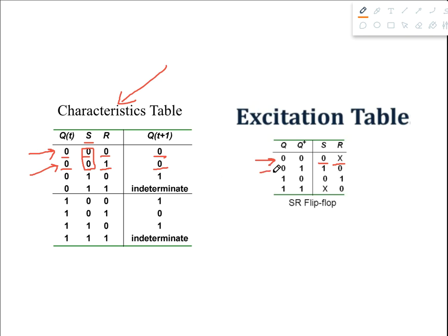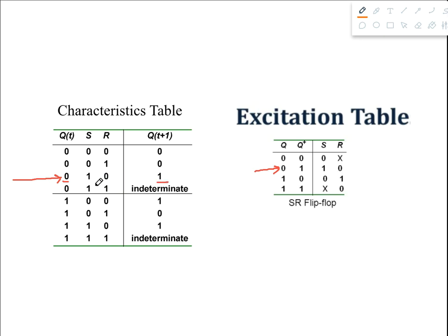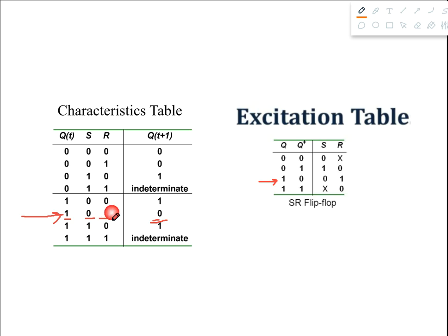For the next combination zero-one, we go back to the characteristic table and find the specific row that has zero as present state and one as next state. This is the only possible row, and for this case S and R were one and zero, so we write S equals one and R equals zero. For the combination one-zero, this is the only row in the characteristic table where present state is one and next state is zero, and S was zero and R was one, so we write S equals zero and R equals one.